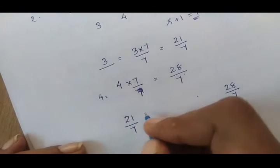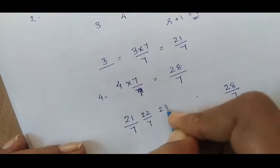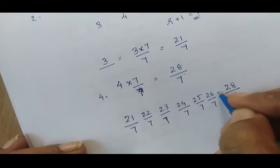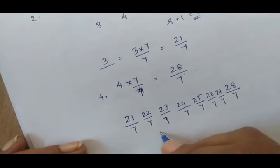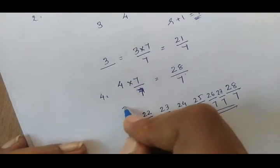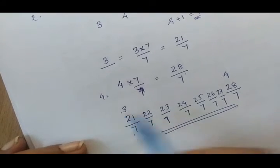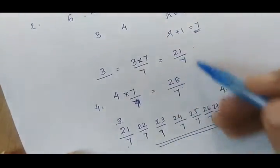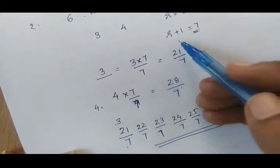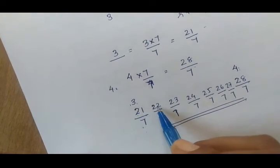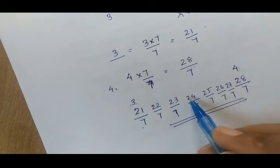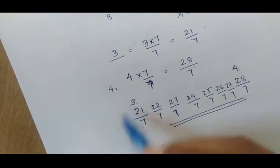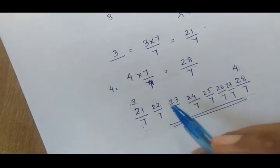Then the six rational numbers in between are: 22 by 7, 23 by 7, 24 by 7, 25 by 7, 26 by 7, 27 by 7. These are the six rational numbers present between 3 and 4. Since 21 by 7 is equivalent to 3 and 28 by 7 is equivalent to 4, we increment the numerator by 1 each time, keeping the denominator as 7.